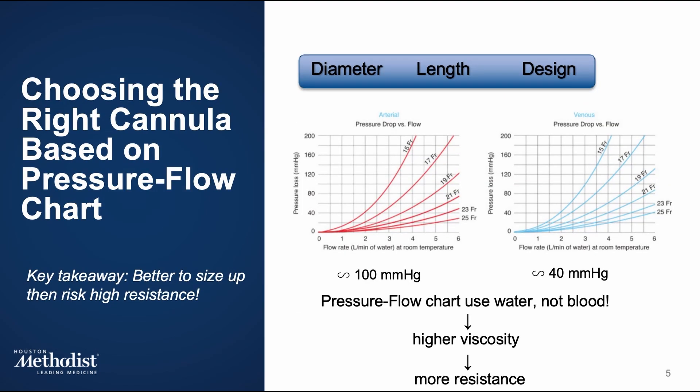Let's shift to pressure-flow relationships and how this helps us choose the right cannula. We use pressure-flow charts to visualize how much pressure is needed to achieve a specific flow rate through a given cannula. You'll typically see flow rate on the x-axis in liters per minute, and pressure on the y-axis in mmHg. When selecting arterial cannulas, we aim for the smallest size that can deliver the necessary flow rate with a pressure drop under 100 mmHg. For venous cannulas, the target is 140 mmHg.